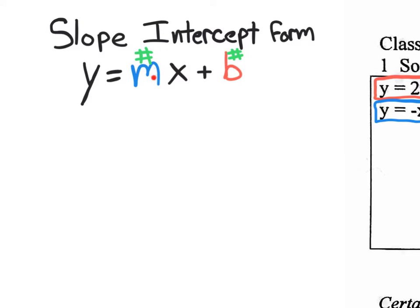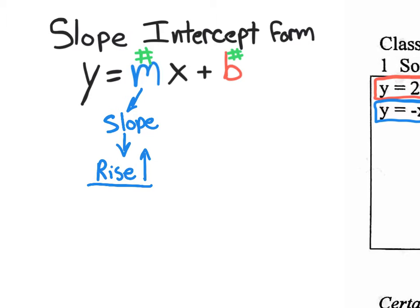You need to know what the first number actually represents — that's the slope, the steepness of a line. We should remember that slope is a fraction: the numerator is the rise, which means up (or down if it's negative), and the denominator is the run. So slope is rise over run.